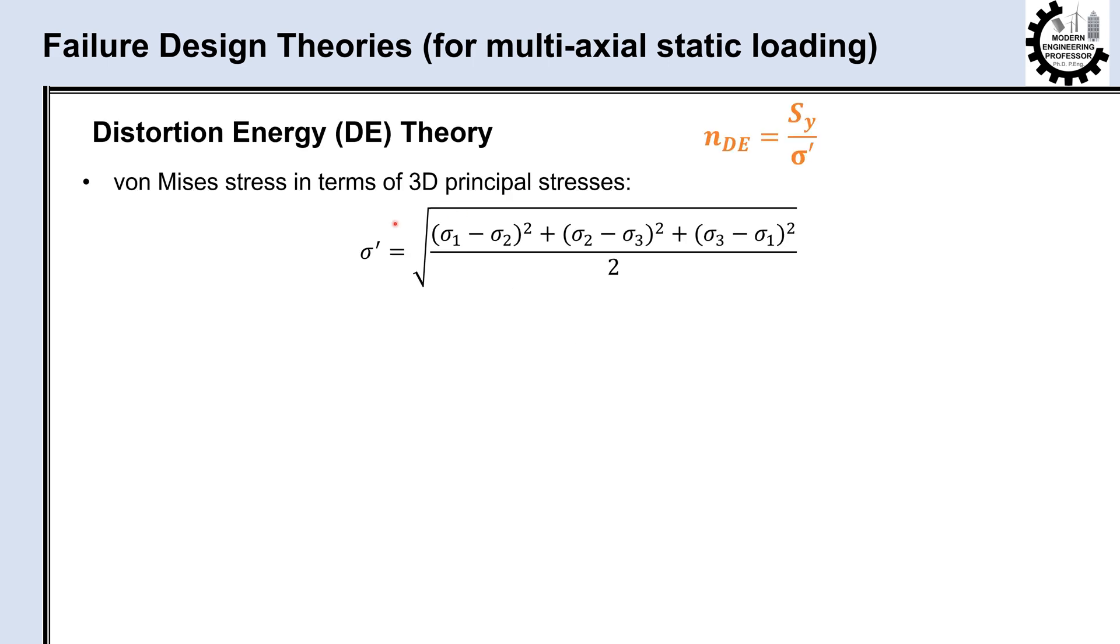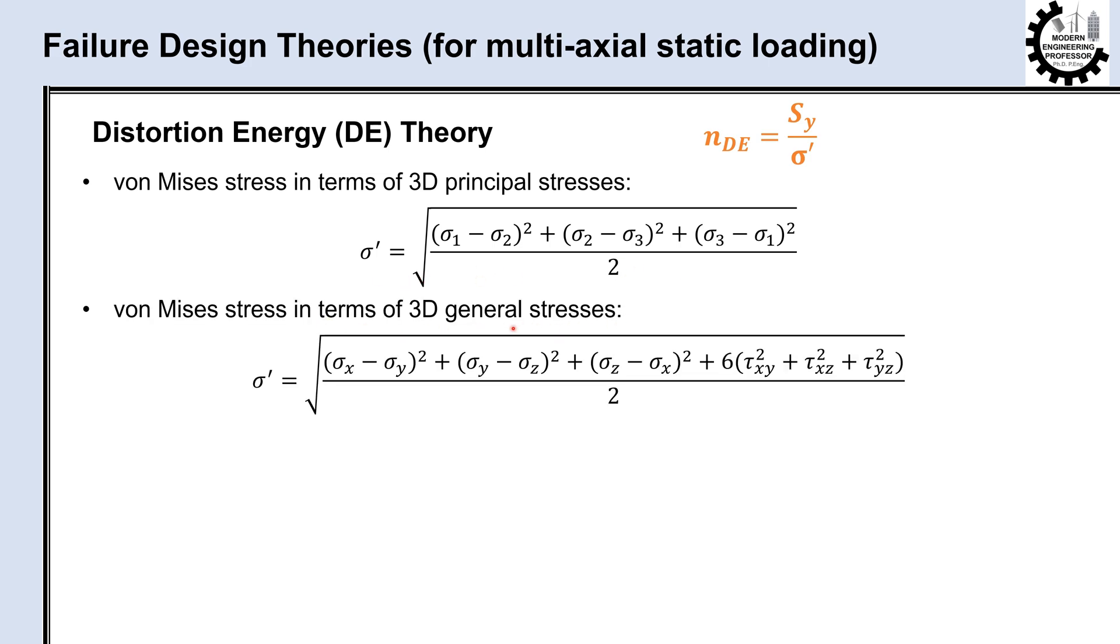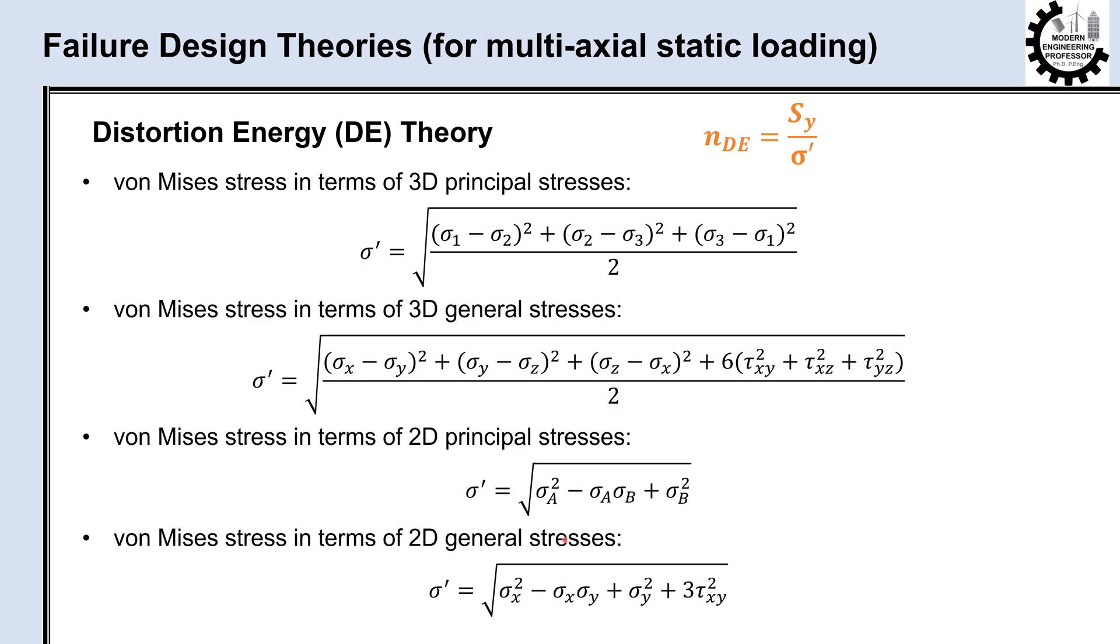In addition to the previous formula, the von Mises stress can also be expressed in terms of the general stress components: sigma X, sigma Y, sigma Z, tau XY, tau XZ, and tau YZ. For two-dimensional plane stress, the von Mises stress in terms of principal stresses and general stress components is simplified to the following equations.